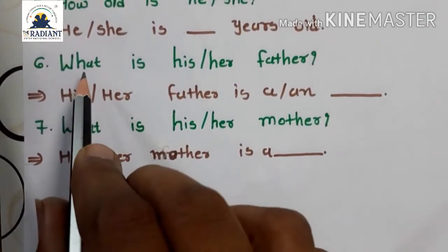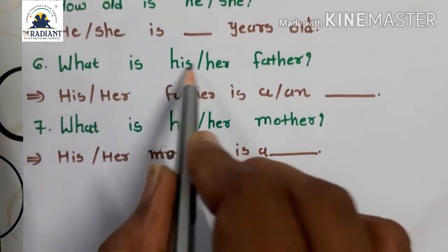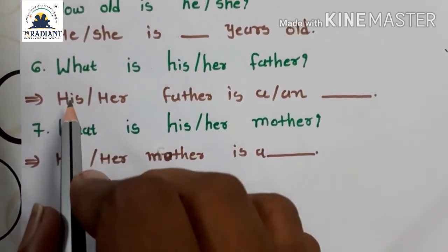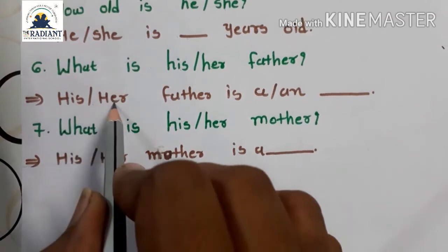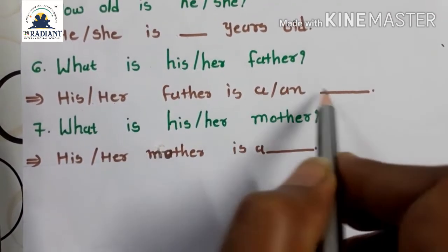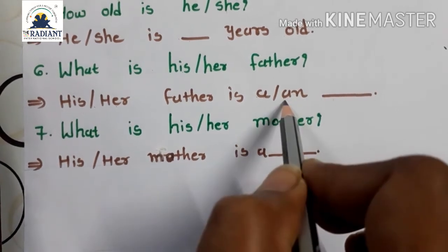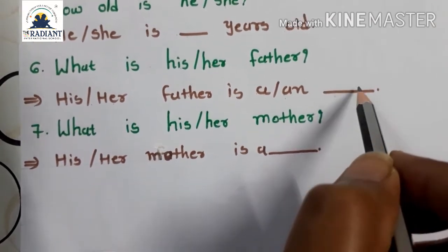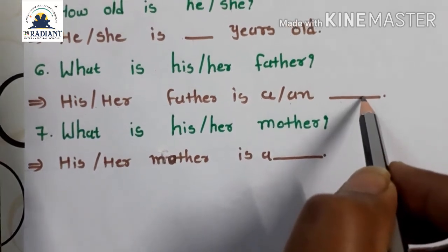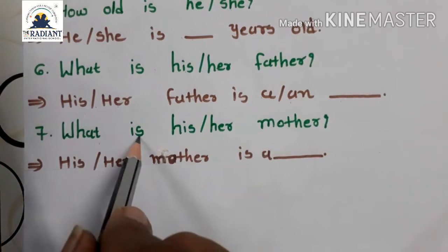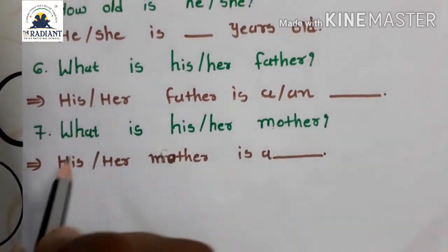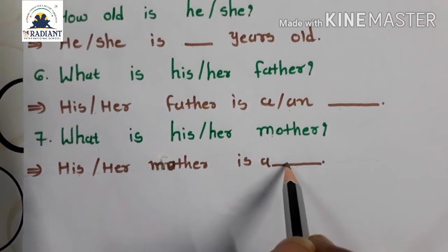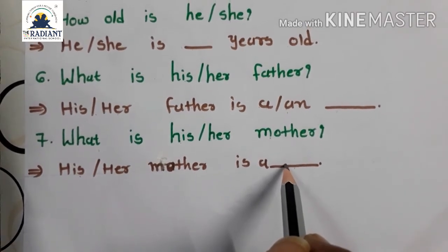Next question: what is his or her father? Jhenéma aapnei pota naa papa vishe lakya hoi toho, e pramani tamara friend naa papa vishe lakwaanun ho chhe. His or her father is a or n — engineer hoi toho n, right? Doctor, policeman, teacher, driver, kai pna hiya tamarae lakwaanun, right. Then next: what is his or her mother? His or her mother is a khali chigya — doctor, nurse, teacher and last housewife.